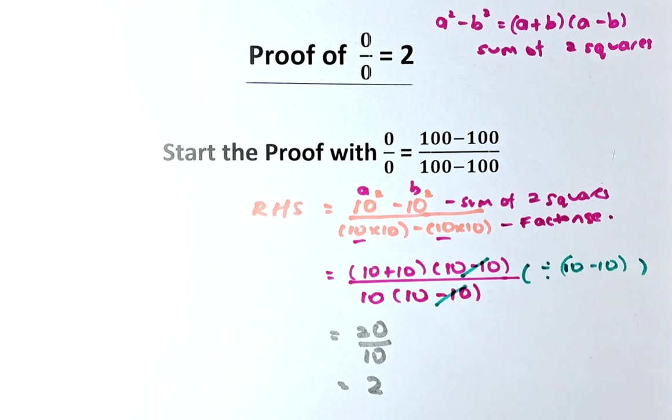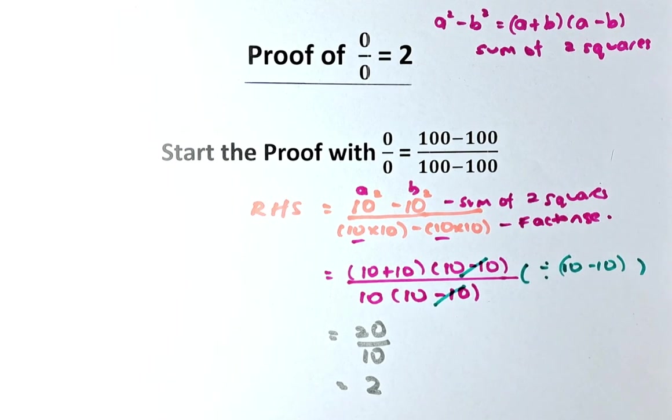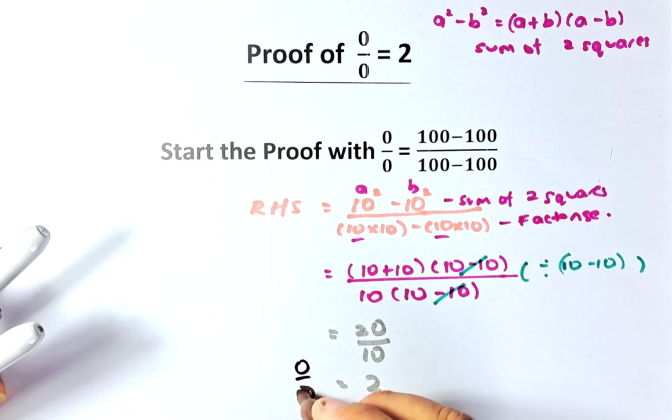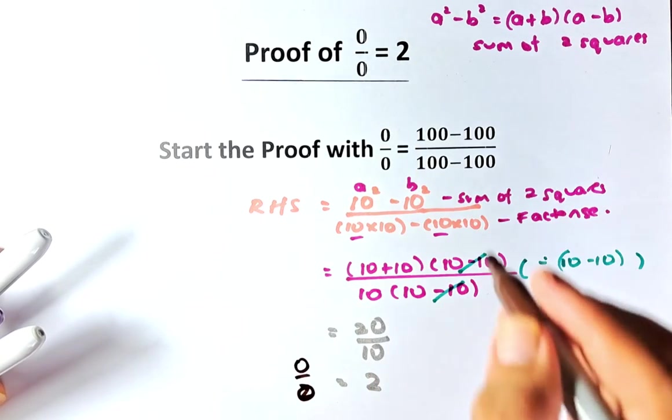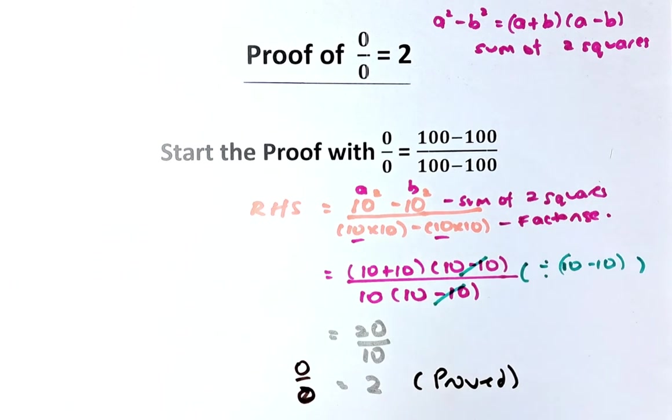So if you see from the top, the top of the equation, where we have 0 over 0, so on the right-hand side is 2. On the left-hand side is 0 divided by 0. So 0 divided by 0, then that's equal to 2. So we have proved that 0 divided by 0 is equal to 2.